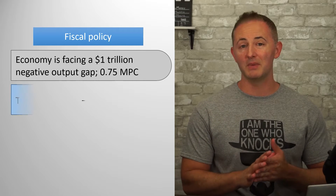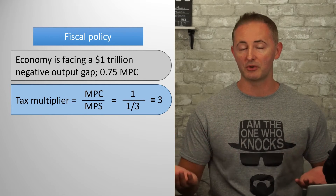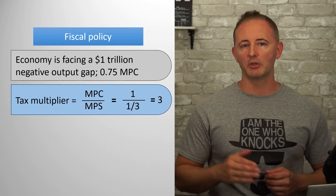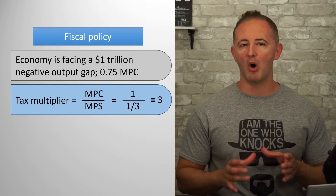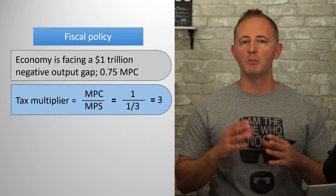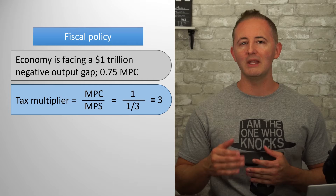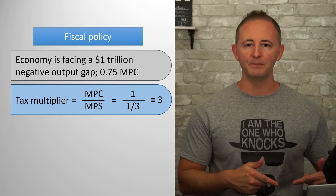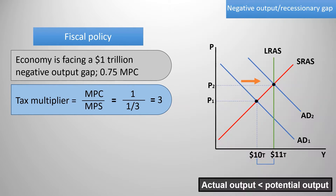The tax multiplier is MPC over MPS, so it equals 3. The tax multiplier is smaller than the expenditures multiplier because taxes and transfers only affect GDP indirectly. $1 trillion divided by 3 equals about $333.33 billion, and that would be the necessary dollar amount of the tax cut or transfer increase to close the trillion dollar negative output gap.